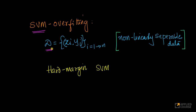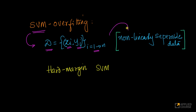Imagine that you are given a dataset D which consists of pairs Xi, Yi — your standard classification setting. We are using support vector machines for classification with n data points as training data. Let's assume it is binary classification, so your Yi's are binary and your Xi is your feature vector. Also assume that the data is non-linearly separable.